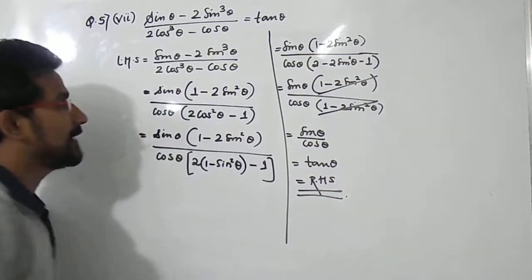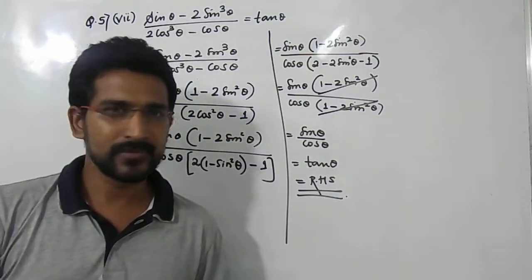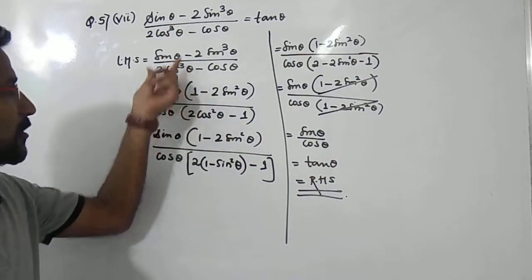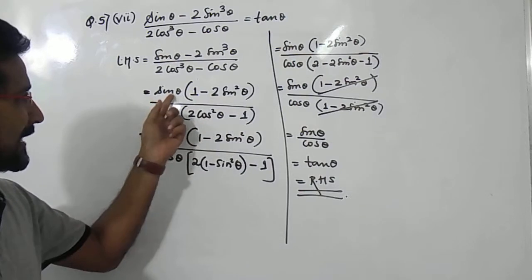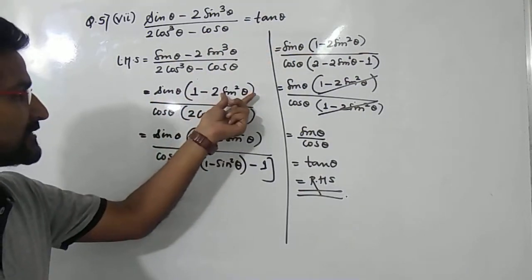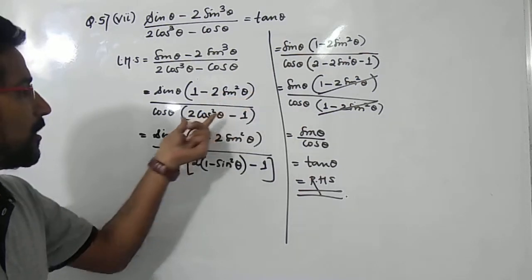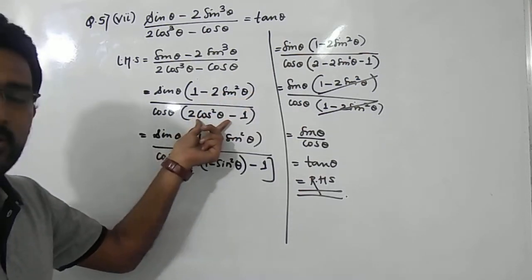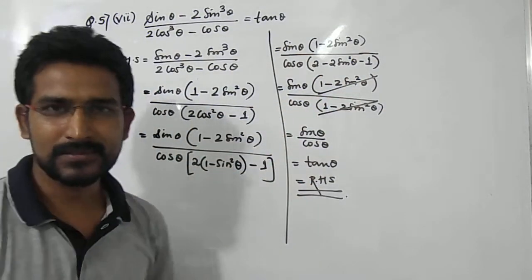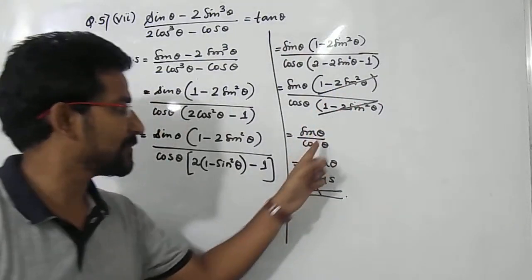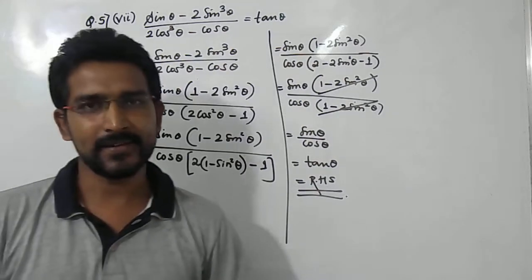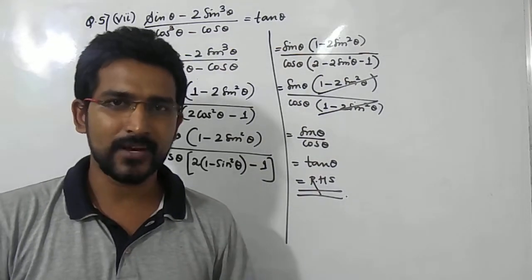So this is a very simple identity that we can prove. We just took sin θ and cos θ common from the numerator and denominator respectively, giving sin divided by cos, which is tan. Then we converted cos²θ in terms of sin²θ using the Pythagorean identity so both bracket terms became the same and cancelled. Sin divided by cos is tan θ, and that proves the identity.